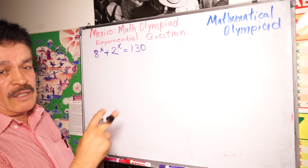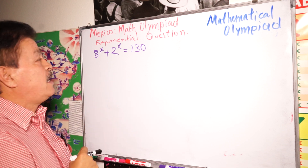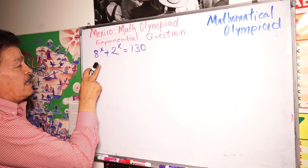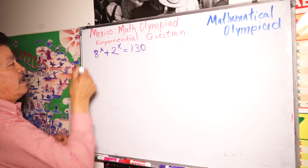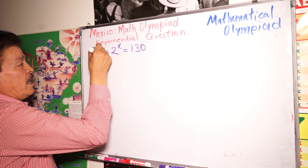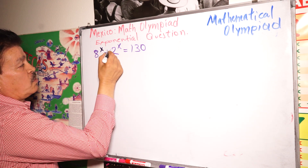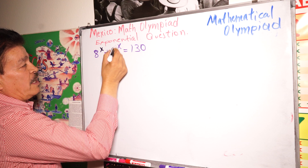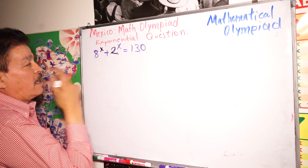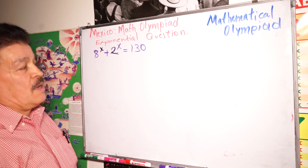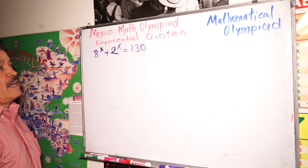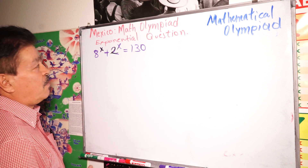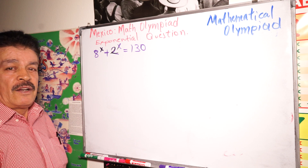Mexico. Exponential question. We have 8 to the X power plus 2 to the X power equals 130. So this is an exponential question from the Mathematics Olympiad.